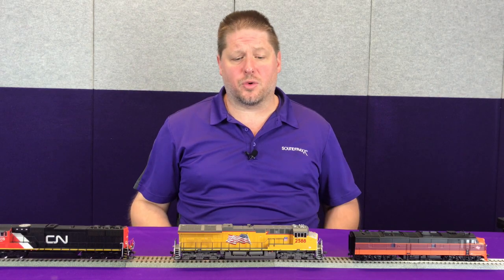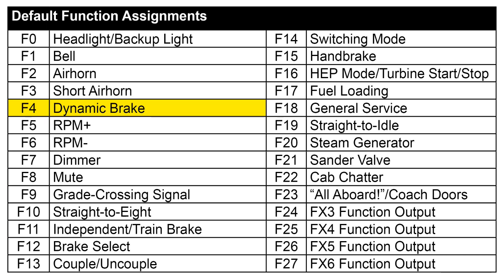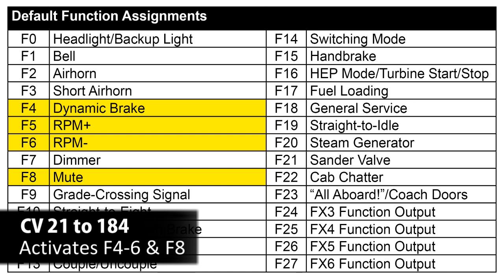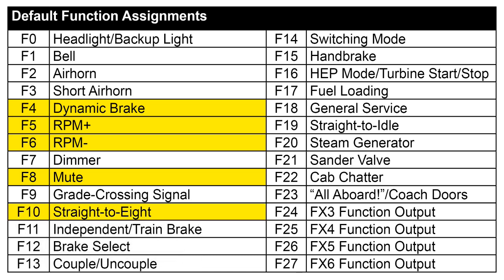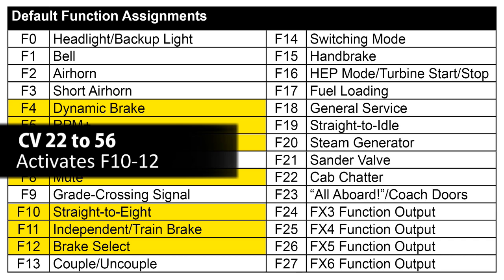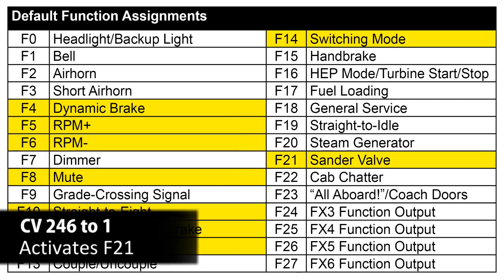For the trailing second unit, we'll look at what needs to be active. No headlight, no bell, no horn, no short horn. The first function we'll enable is F4 for the dynamic brake, then F5 and F6 so we can manually override the notching together across all units. F7 dim is not needed since there are no lights on the second unit, but we do want F8 enabled. F9 is not needed since it's an air horn. F10 straight to 8, F11 brake application, and F12 brake selection we do want enabled, along with F14 switching mode and F21 sander valve. No lights on this unit, so we stop there.